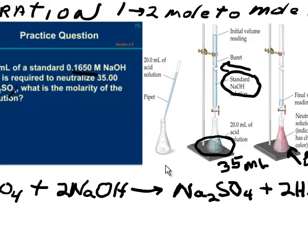We've got 35 milliliters of H2SO4 in the Erlenmeyer flask and a little bit of indicator so that we can recognize when the color changes at the end point of the titration. In the burette, we've got our standard sodium hydroxide, that's 0.1650 molar sodium hydroxide.